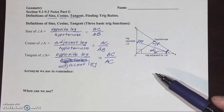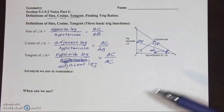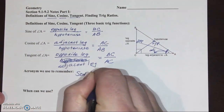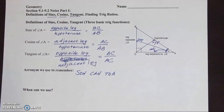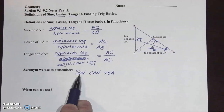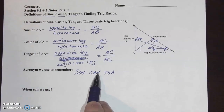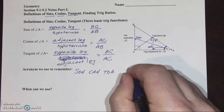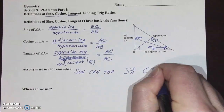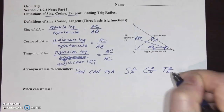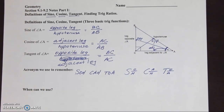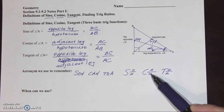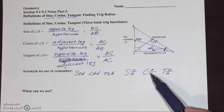An acronym we use to remember these — and you will need to know these ratios — is SOHCAHTOA. Sine is opposite over hypotenuse. Cosine is adjacent over hypotenuse. Tangent is opposite over adjacent. I like my students to actually write the acronym with the fractions, since they are ratios or fractions: Sine is opposite over hypotenuse, cosine is adjacent over hypotenuse, tangent is opposite over adjacent. SOHCAHTOA.